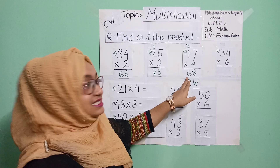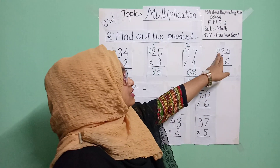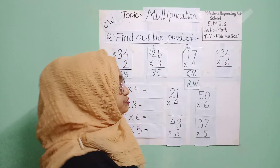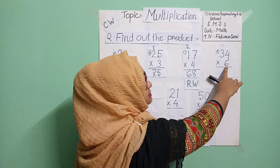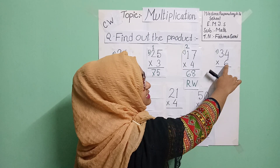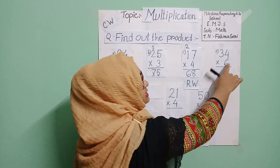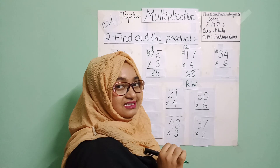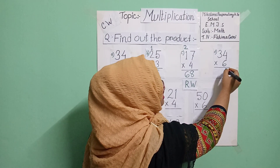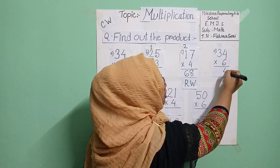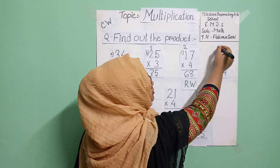Okay students, now we will do problem D. The multiplicand is 34 and the multiplier is six. We will use the six times table. Six fours are twenty-four, so I write only four here and carry two to the tens place.